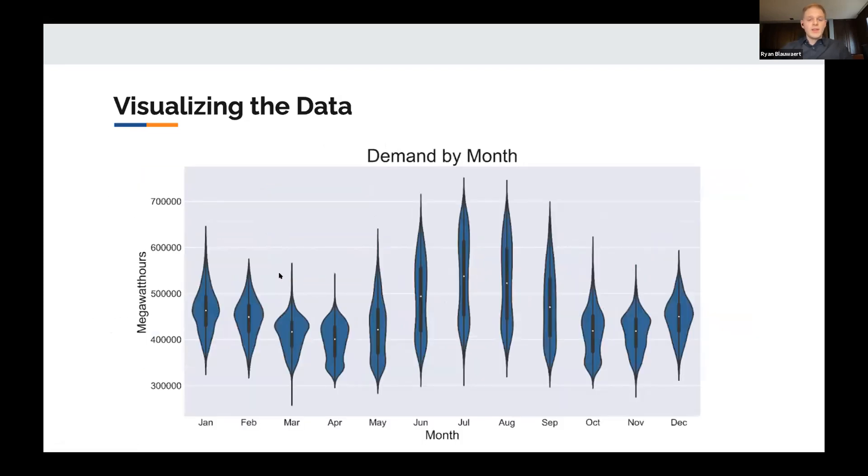Another way of visualizing this: if we look at the distribution of the data, in the summer months you can see that we peak, then fall off in both the spring and the fall. And then we do have a small gain again in electricity consumption in those winter months when it gets cold and we need to heat our homes again.